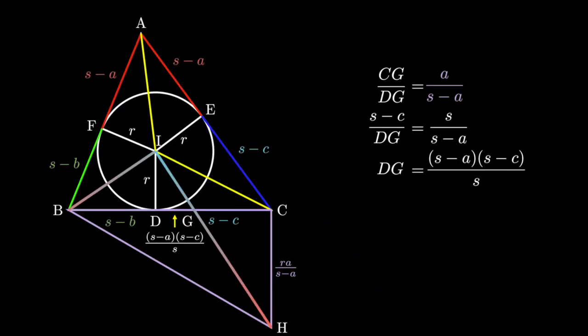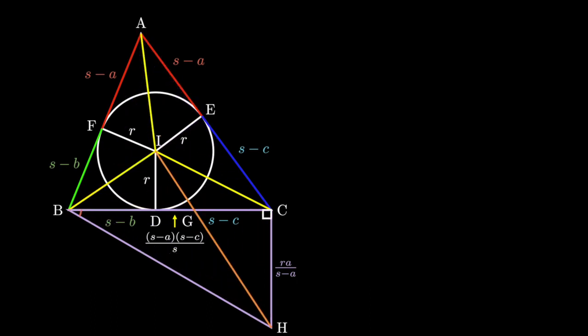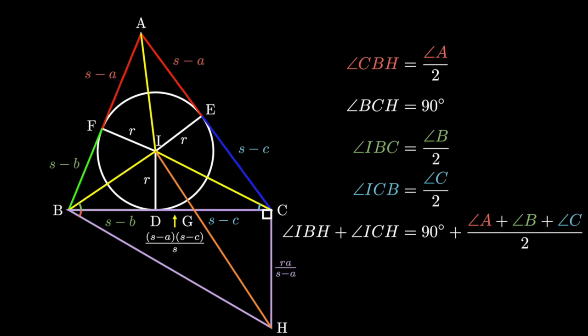Now, back to the problem. Since we constructed BCH as similar to AEI, we know two of the angles already. CBH equals A over 2, and BCH is a right angle. Also, since the incenter lies on the angle bisectors, IBD equals B over 2, and ICD equals C over 2. If we add all of them together, angle IBH plus angle ICH equals 90 plus A plus B plus C over 2.